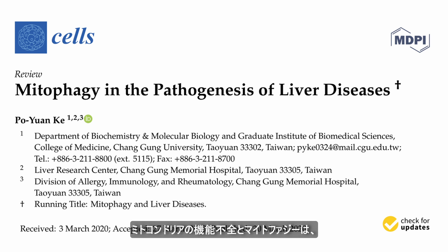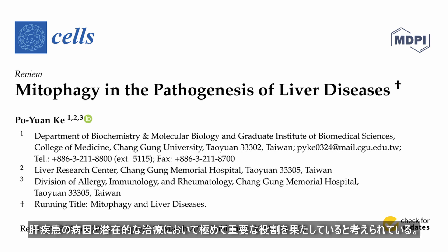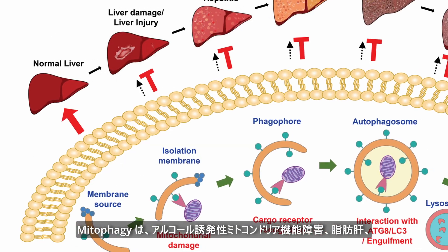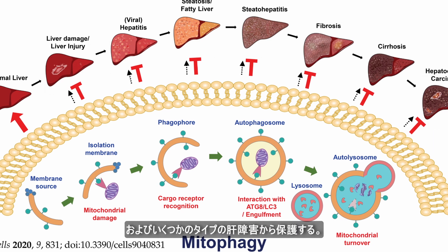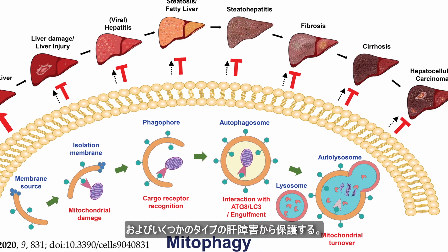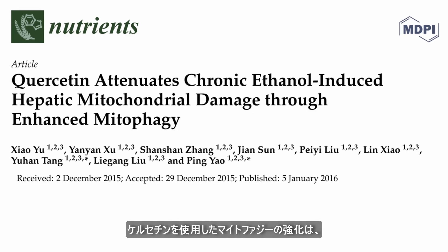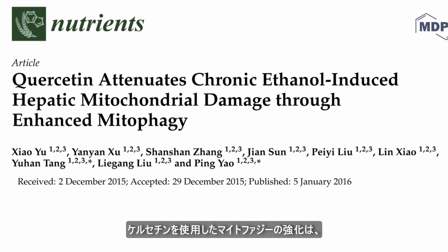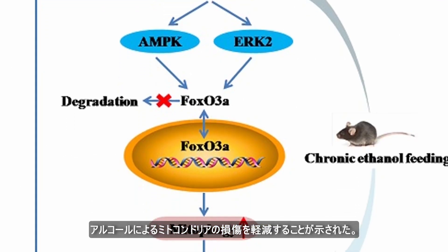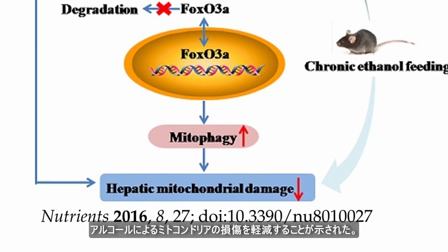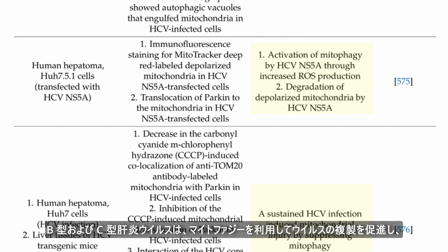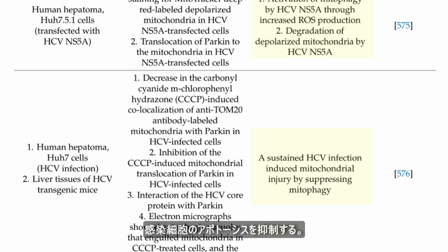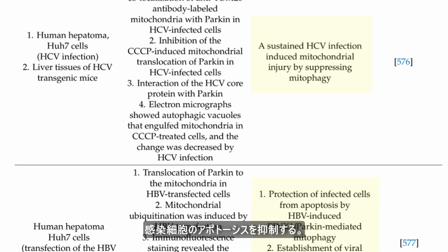Mitochondrial dysfunction and mitophagy are thought to play a pivotal role in the pathogenesis and potential treatment of liver disease. Mitophagy is protective against alcohol-induced mitochondrial dysfunction, hepatic steatosis, and several types of liver injury. Enhancement of mitophagy using urolithin A was shown to reduce alcohol-induced damage to mitochondria. Hepatitis B and C viruses exploit mitophagy to promote viral replication and suppress apoptosis in infected cells.